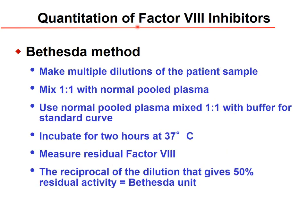Quantitation of factor VIII inhibitors uses the Bethesda method. Multiple dilutions of patient samples are mixed one-to-one with normal pooled plasma, incubated for at least two hours, and the residual factor VIII is measured. The dilution that gives approximately 50% residual activity is defined as one Bethesda unit. A more potent inhibitor requires greater dilution — for example, if inhibition disappears at 1:600 dilution, that defines the Bethesda unit value.